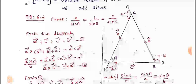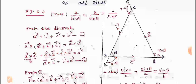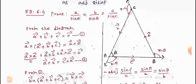Next, prove the sine rule: a by sin A equals b by sin B equals c by sin C. The diagram is the projection formula triangle. In the triangle, a, b, c are side vectors. From the diagram, all sides add to zero by the triangle rule: a vector plus b vector plus c vector equals zero vector. We can pre-multiply by A vector using the cross product.